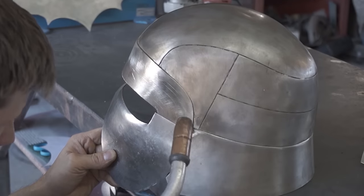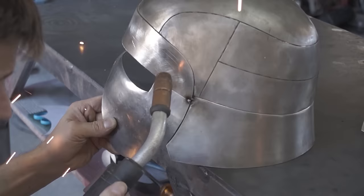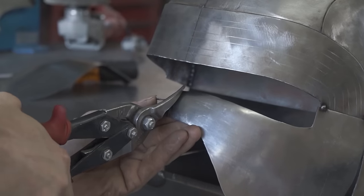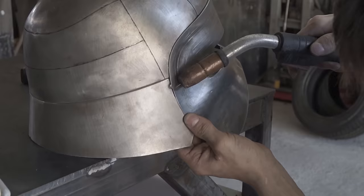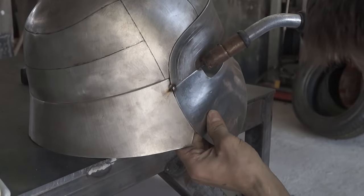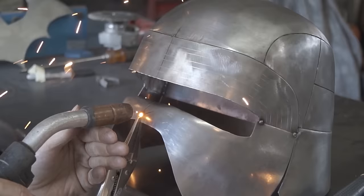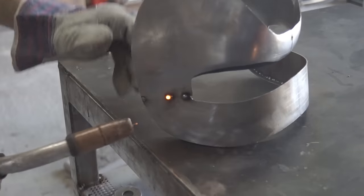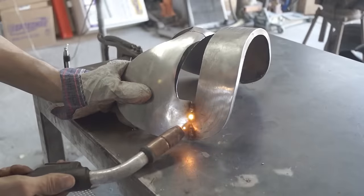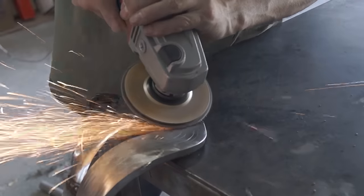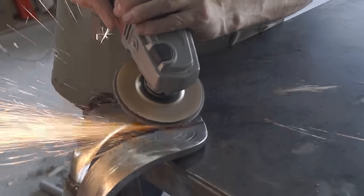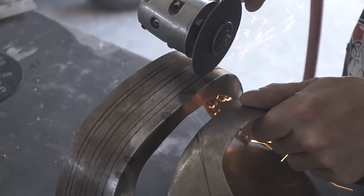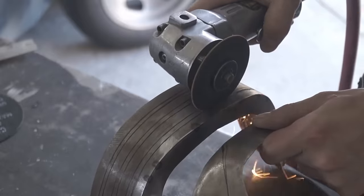Next I tack welded the cheek pieces into place. Now that I got the front half of the helmet done, I started cutting out the detail.